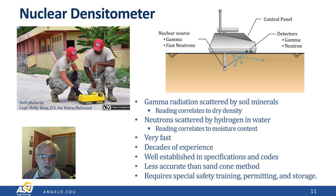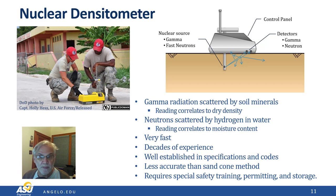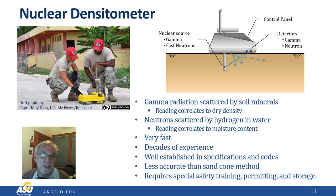That covers all the common methods used to determine the density of soils compacted in the field. These are the most common ways we evaluate the quality of a compacted fill — we measure the in-situ dry unit weight and compare it to the Proctor maximum dry unit weight to determine the relative compaction. However, the material properties we really want to know about our fill are its modulus and strength. In the next section, we'll look at ways we can measure these properties directly rather than using dry unit weight as a proxy.